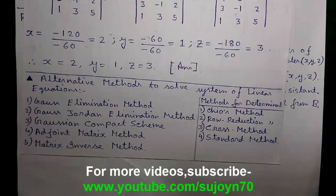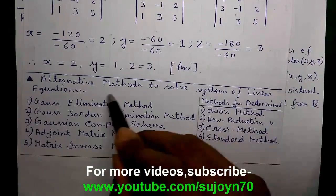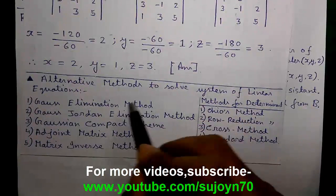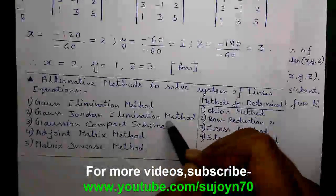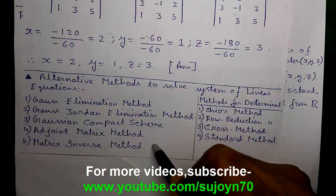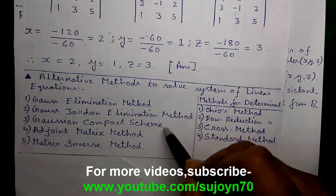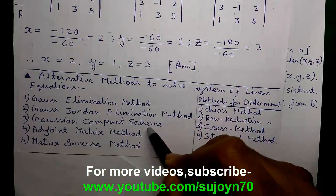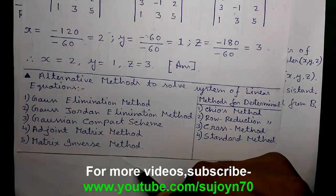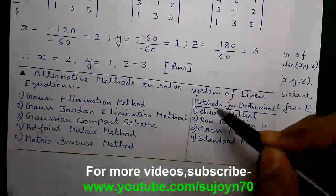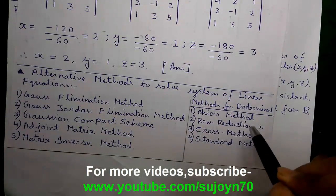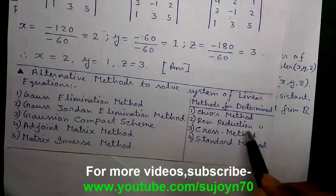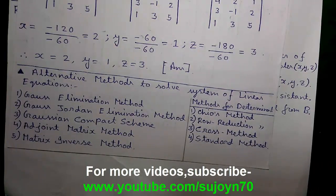By rank of matrix method we have solved a system of 4 linear equations. Alternative methods include: Gauss elimination, Gauss-Jordan elimination, Gaussian compact scheme, Adjoint matrix method, and matrix inverse method — I have videos on all five methods, and this is the sixth one. I also have videos on finding determinants by cofactor expansion, row reduction, and standard method. Links to all are in the video description.